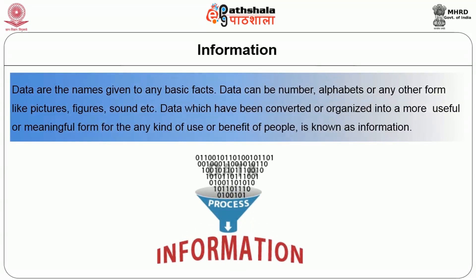Information and data are the names given to any basic facts. Data can be numbers, alphabets, or any other forms like pictures, figures, or sound. Data which has been converted or organized into a more useful or meaningful form for any kind of use or benefit to people is known as information.